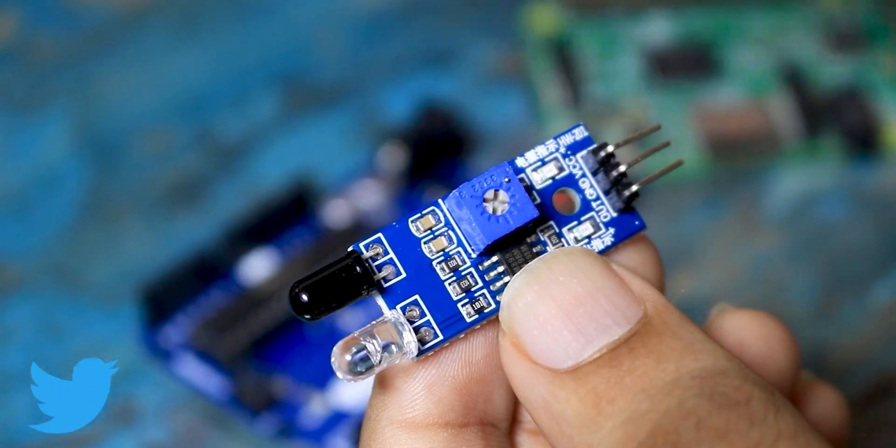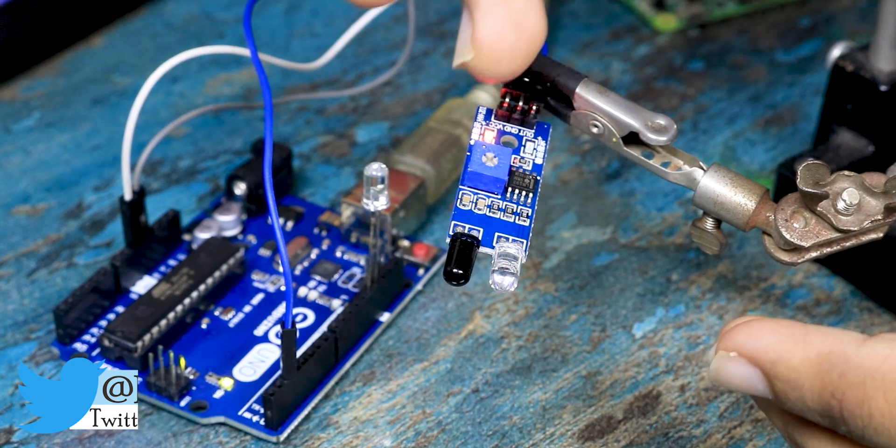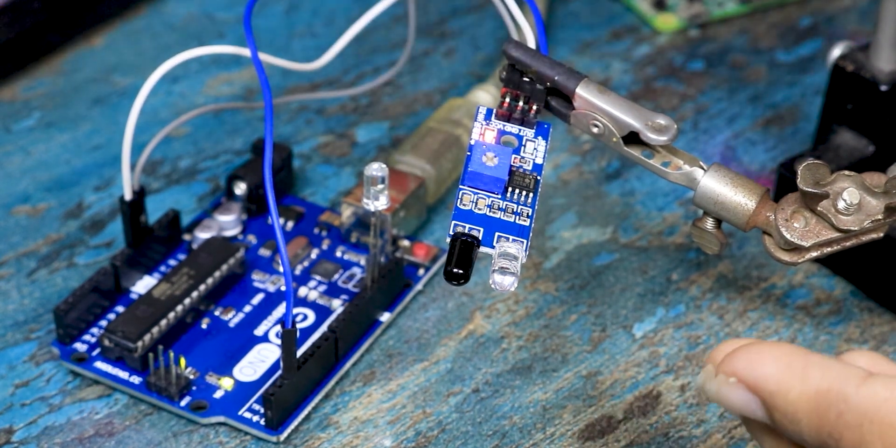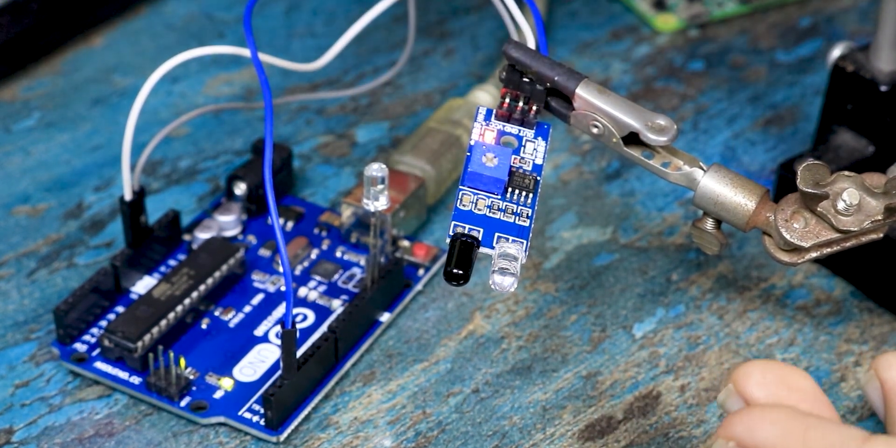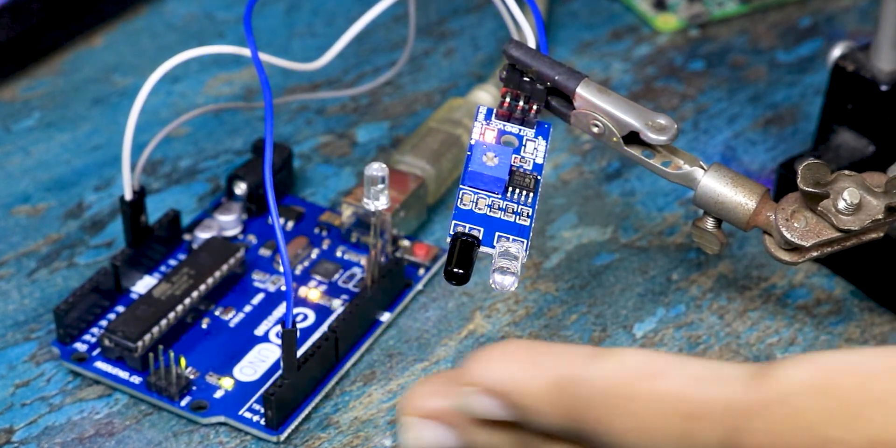So let's first see if it works. So I just finished programming the Arduino and I have programmed it in such a way that if the IR sensor detects something in front of it, the LED on pin number 13 will glow. So now if I put my finger in front of the IR sensor the LED glows. So it works.